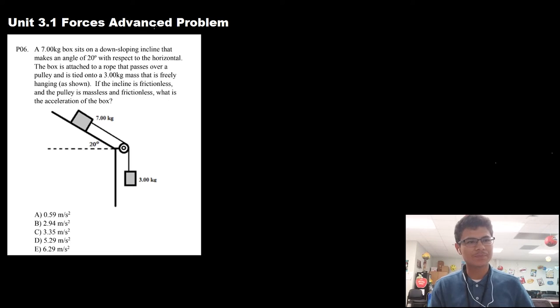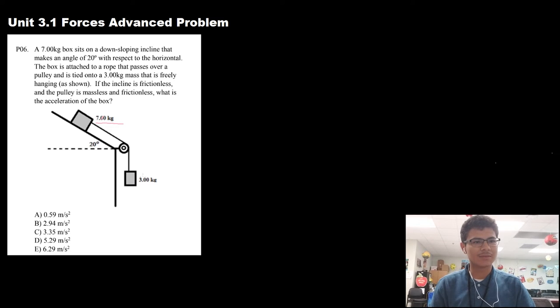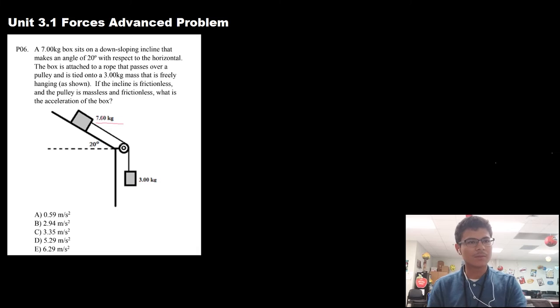So the first thing we need to do, as you can see in the picture here, we have a 7 kilogram box and a 3 kilogram box. They both have a tensional force on this pulley here, on this rope that attaches them. What we need to do first is make a free body diagram of each system and come up with a system of equations that we can solve for.